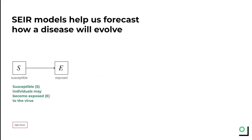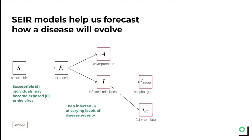Some of those susceptible individuals may become exposed to the virus, which is the second stage, like if they come into contact with someone else who has it, for example. From there, an individual might reach the third stage: infected. Here there are a few different categories — basically an SEIR model splits out infected people based on how severe their cases are. You could have someone who has a mild case or no symptoms, or someone with a severe case who needs the ICU.